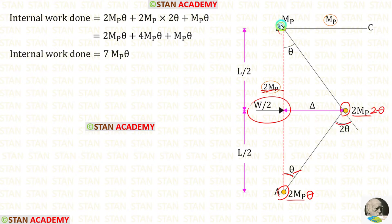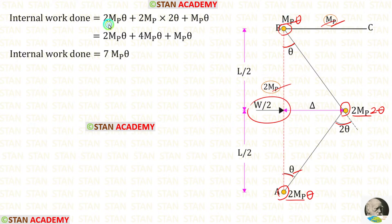At joint B we have a plastic hinge. In joints we must select the smaller MP value. MP is smaller than 2MP, so we select MP and multiply by angle θ. Adding all terms, the internal work done equals 7MP·θ.